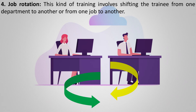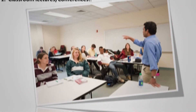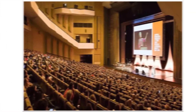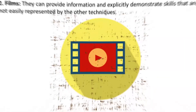Moving on to off the job methods of training. The first method is classroom lecture or conference. This method is well suited to convey specified information, rules, procedures, and methods. The use of audio-visuals or demonstrations can make formal classroom presentations more interesting, helping to increase retention and clarify more difficult points.